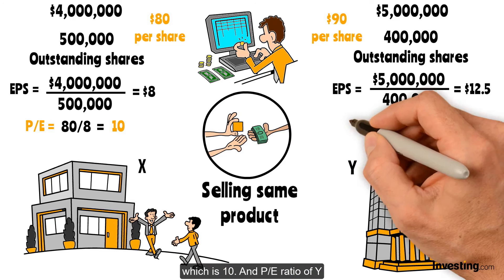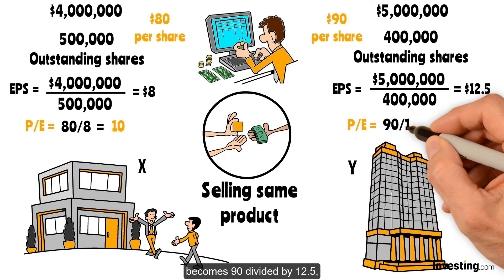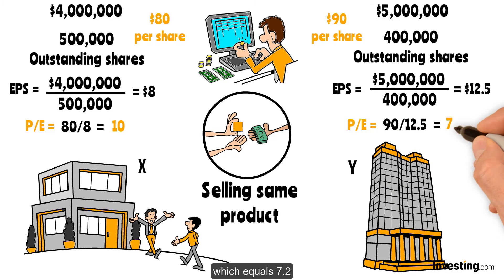And the P/E Ratio of Y becomes 90 divided by 12.5, which equals 7.2.